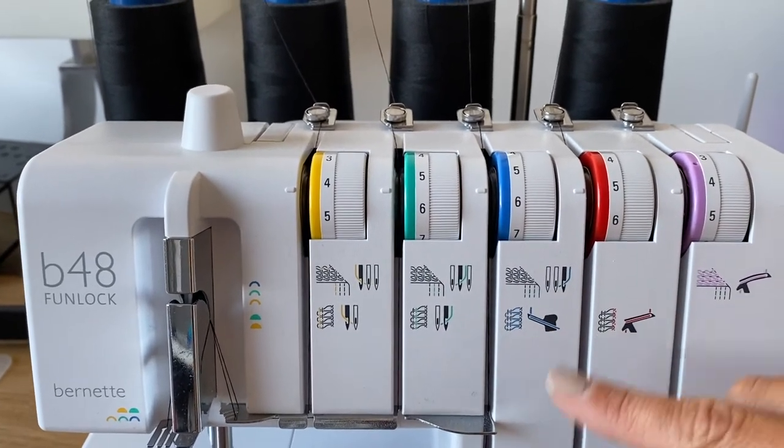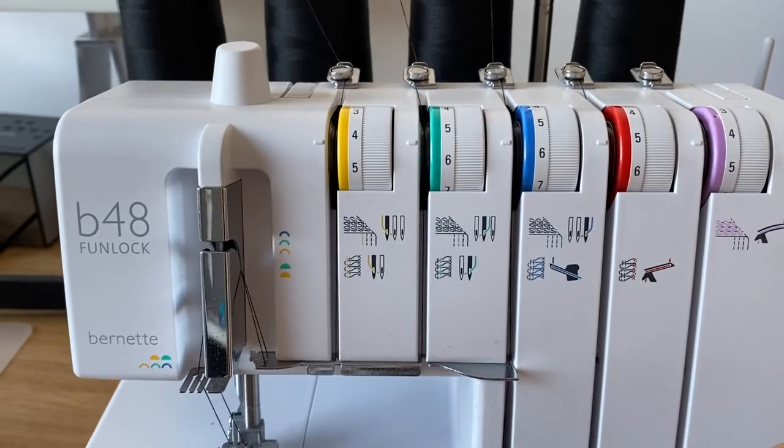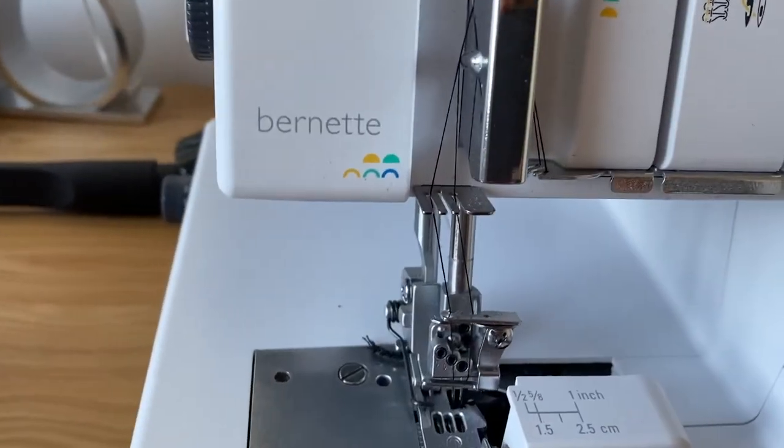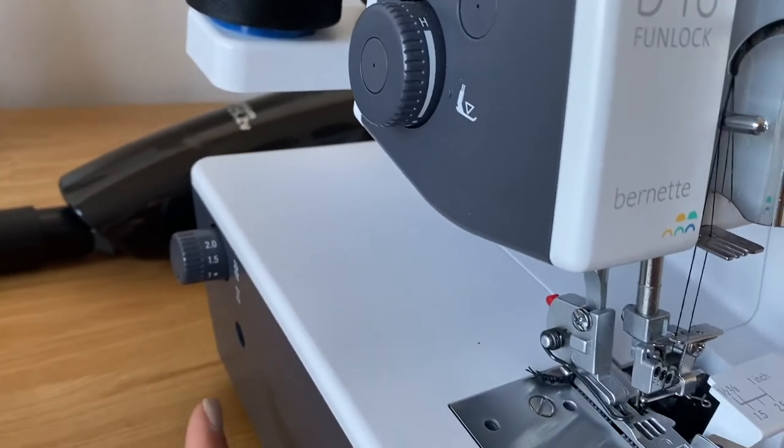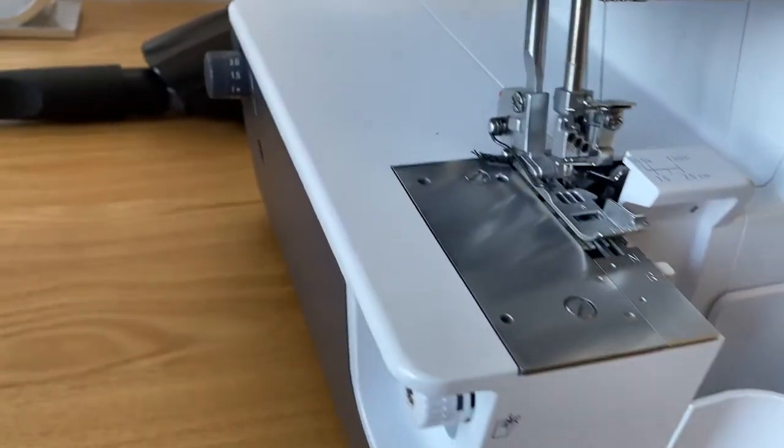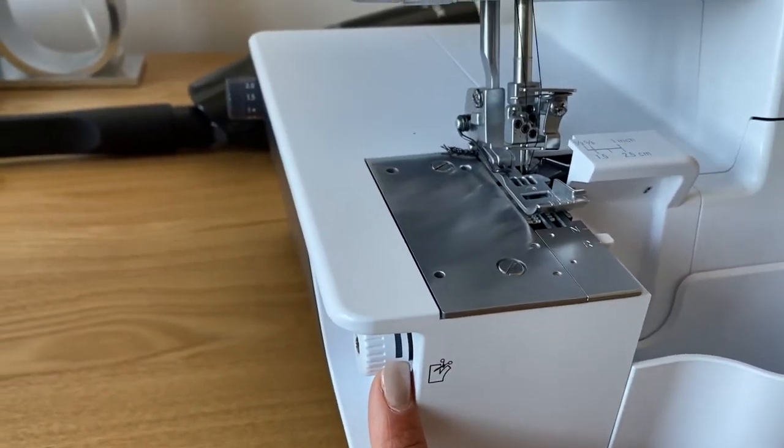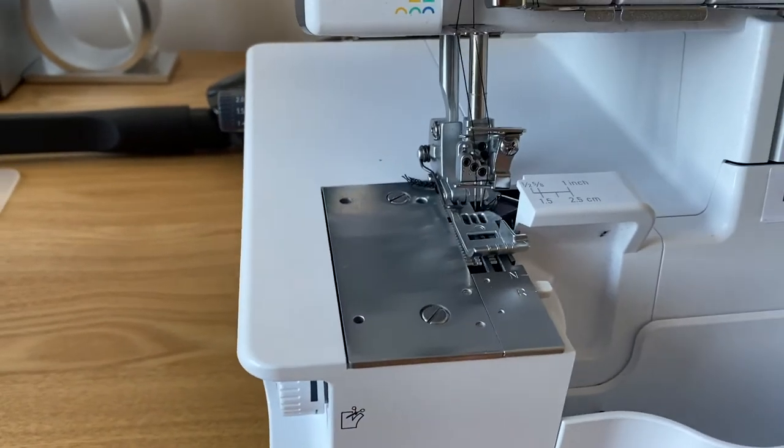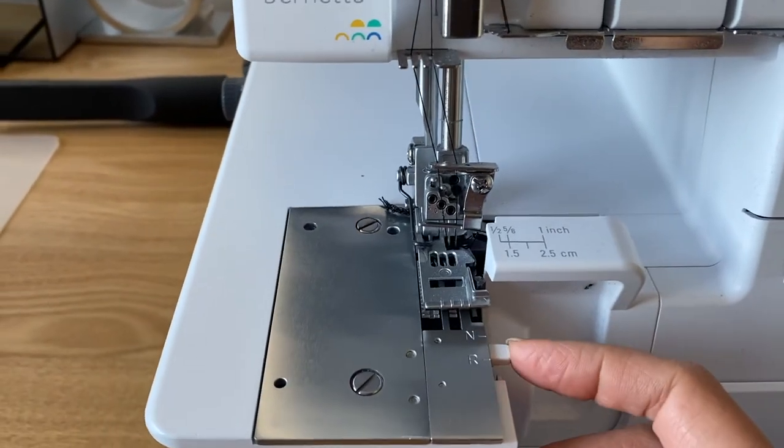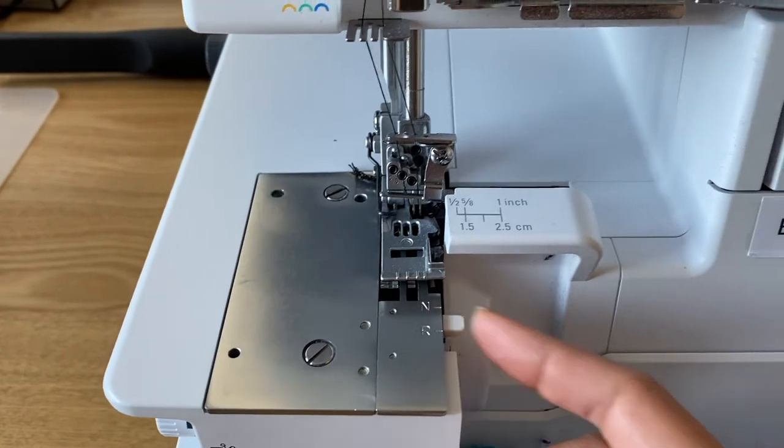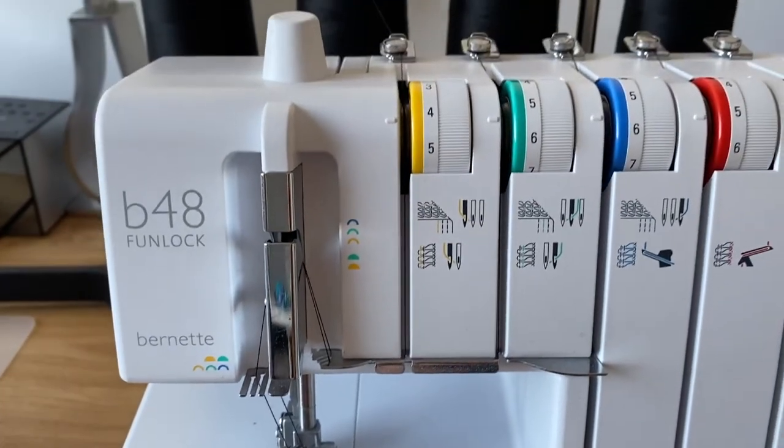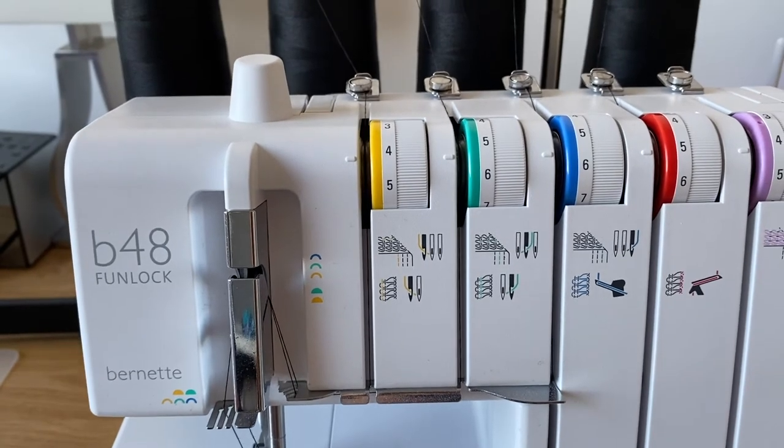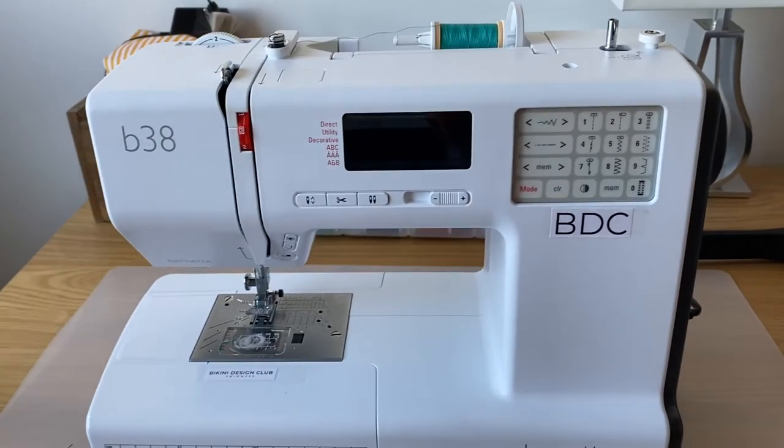And then I can regulate also here the foot pressure, and I also have other regulations there. My cutter and the size of my stitch, so the width. So I have lots of things that I can use and I really love it. This is the overlock. This one is the straight stitch machine, also a Bernette B38.